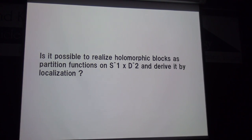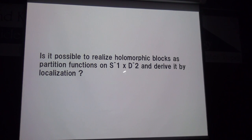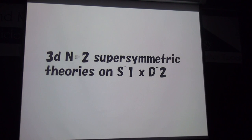So naively, the three-dimensional partition function also factorizes into two partition functions on S¹ × hemisphere. My question is: is it possible to realize the holomorphic block as a partition function on S¹ × hemisphere and derive it directly by localization? This is my motivation. In order to use localization, we construct a three-dimensional supersymmetric theory on this geometry.